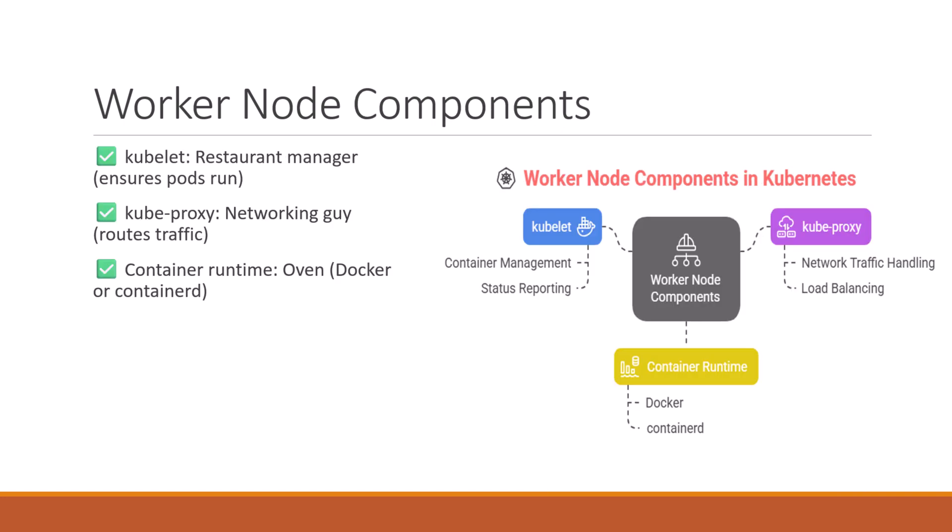Each pizza shop — meaning each node — has three main tools: kubelet, kube-proxy, and container runtime. Kubelet is the shop manager: it checks if all the chefs (containers) are working and reports back to headquarters. Kube-proxy is the internal phone system — it makes sure calls (network traffic) get to the right chef station (pod).